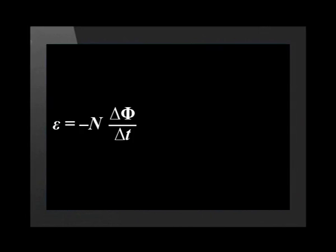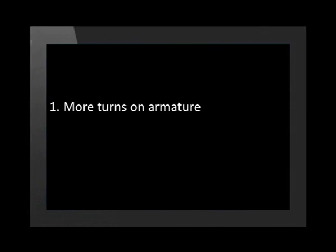The EMF is equal to the number of turns multiplied by the rate of change of magnetic flux. So how do I make a better generator? We can simply add more turns to get more EMF, or we could increase the strength of the magnets to increase the change in flux. The easiest way to make more electricity from a generator is simply to turn it faster, increasing the rate of change of magnetic flux.